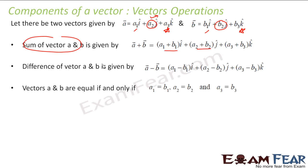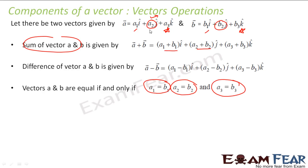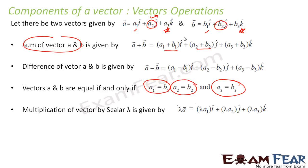Vectors a and b are equal if and only if their corresponding components are equal: a1 = b1, a2 = b2, and a3 = b3. That is, the î, ĵ, and k̂ components all match correspondingly — only then we say the vectors are equal.